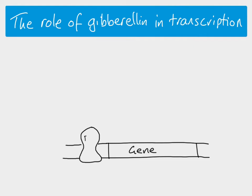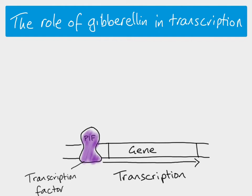Gibberellin is involved with the expression of the gene for amylase. So here is our gene — let's say this is the gene for amylase. This molecule here, PIF, is a transcription factor. At the moment it is bound to the promoter region, which means transcription of the amylase gene is able to take place.